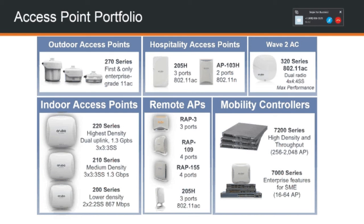Last but not least in our portfolio, we have controllers. We have two different series — the 7000 series and the 7200 series. The primary difference is how many access points they can support. The 7000 series starts at 60 APs; one model looks like an access point — it's very small and low-powered but great for a small branch. The 7200 series is for high density; people generally stack these. In stadiums like the Moda Center here in Portland, where the Trail Blazers play, you'll see several 7200 series controllers connected together.